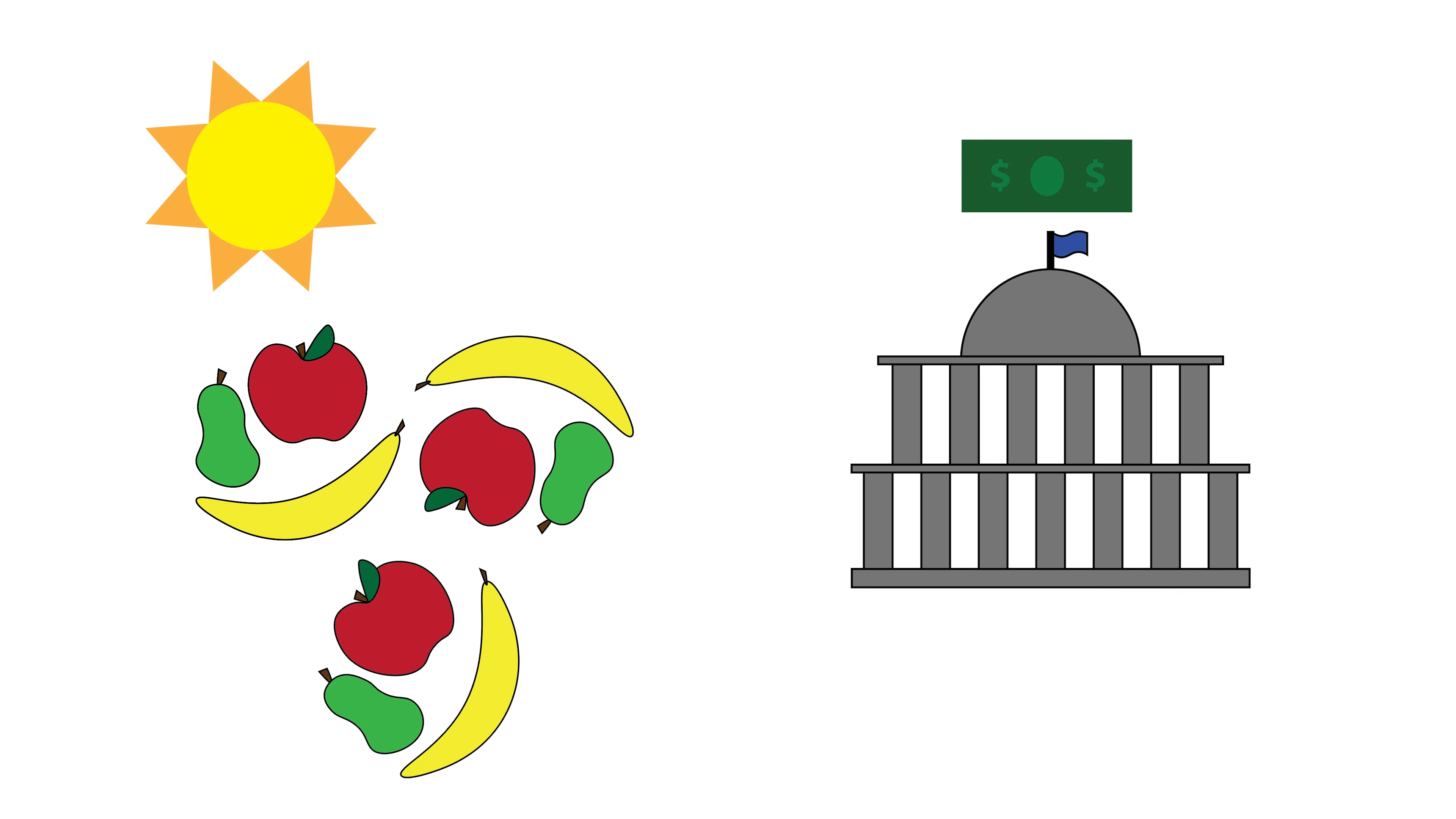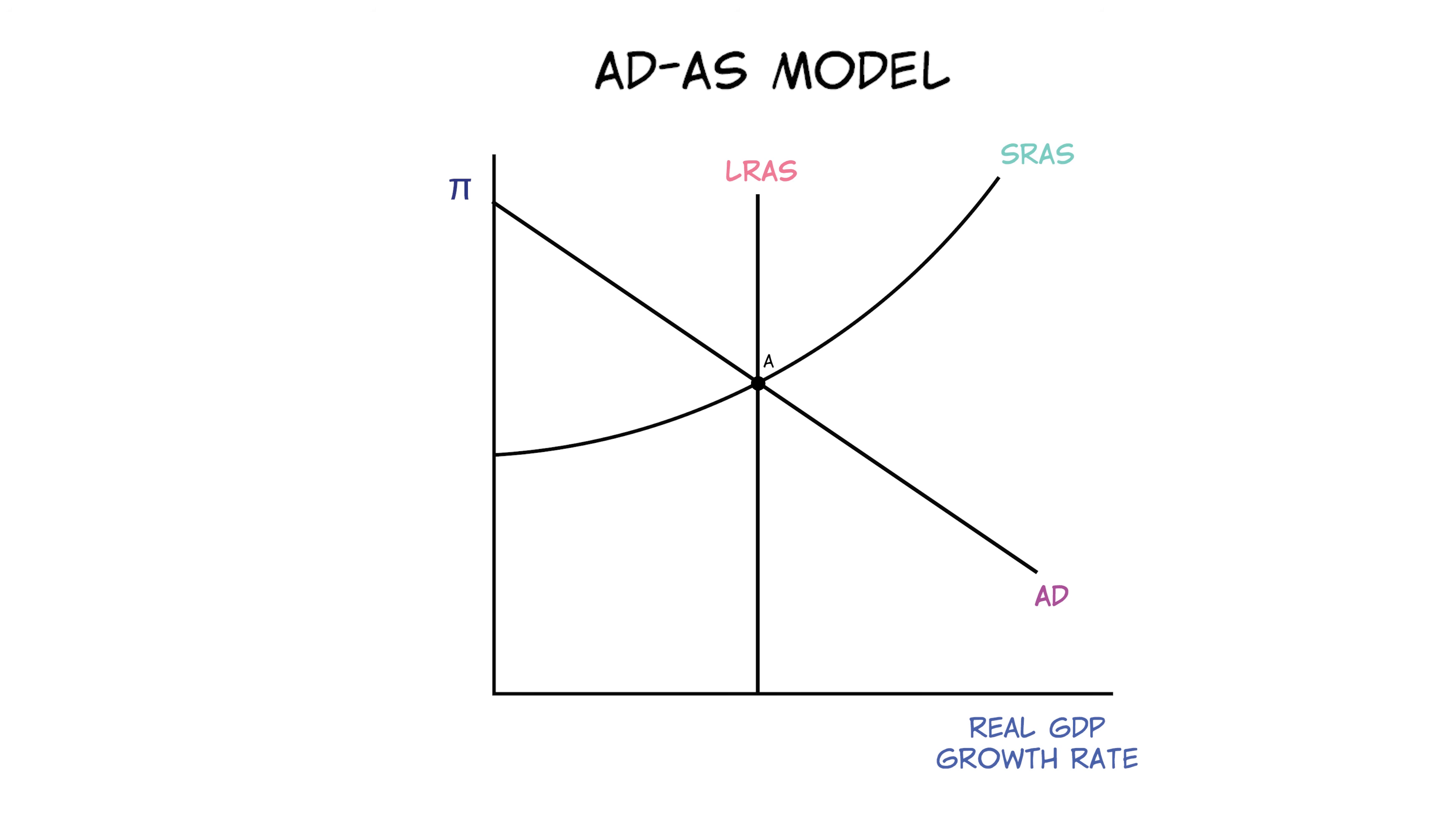So let's try another example. The economy experiences a year of excellent weather for growing crops, and the government cuts back on spending. So let's reset the graph. If the economy experienced good weather for crops, fundamental factors change and will shift the LRAS curve to the right. But we don't stop there.